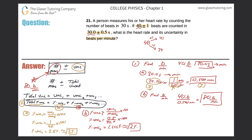Now we have enough information to find the total percent uncertainty. Adding the two together: 3% plus 2% equals 5%. So the total percent uncertainty is 5%.